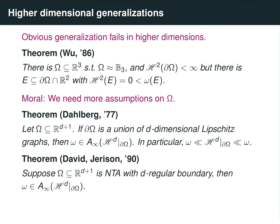David and Jerison showed that if you have a domain that is non-tangentially accessible (NTA) and its boundary is Ahlfors regular — meaning the surface measure of any ball centered on the boundary is comparable to the radius to the power d — then you again have mutual absolute continuity of harmonic measure with surface measure, and harmonic measure is again an A-infinity weight. The proof is mostly geometric measure theory: they approximate the boundary by Lipschitz graphs, use Dahlberg's theorem to get the A-infinity condition on Lipschitz subdomains, and show this condition passes to harmonic measure on the boundary.